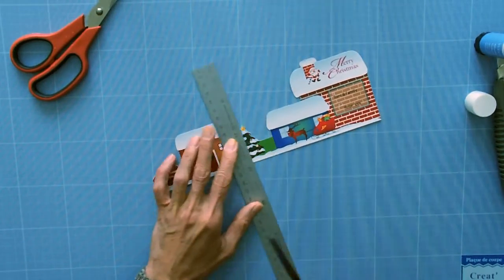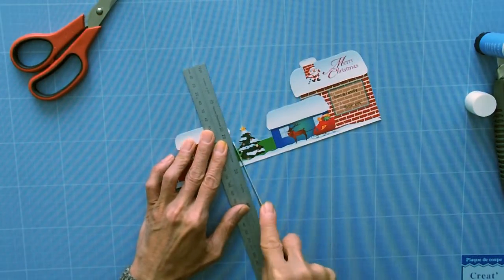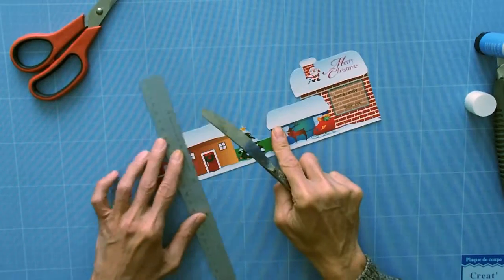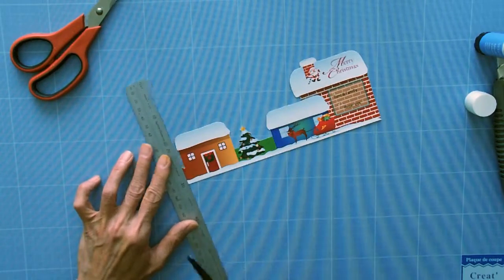Now use the blunt knife and steel ruler to score all the fold lines and apply concertina folds to it.